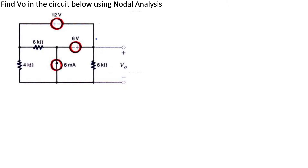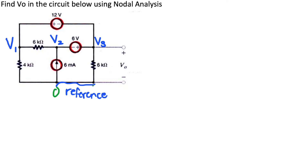The first thing we should do is label our nodes. We have V1 over here, V2 in the middle, and V3 over here. We also have on the bottom our reference node. From our previous videos, the reference node is always zero because V1, V2, and V3 are all directly connected to it.